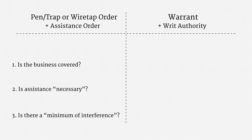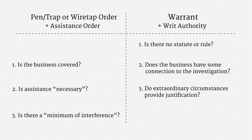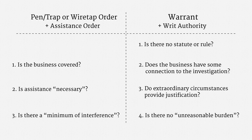On the warrant side, there are roughly four questions to ask. First, is there no statute or rule on the issue? If there is, the All Writs Act is displaced. Second, does the business have some connection to the investigation? Third, do extraordinary circumstances justify the compelled assistance? And last, is there no unreasonable burden associated with assistance? Note that there are strong parallels between these two approaches to compelled assistance. The questions aren't identical, but they are closely related.